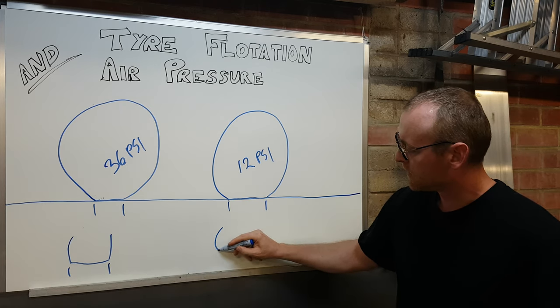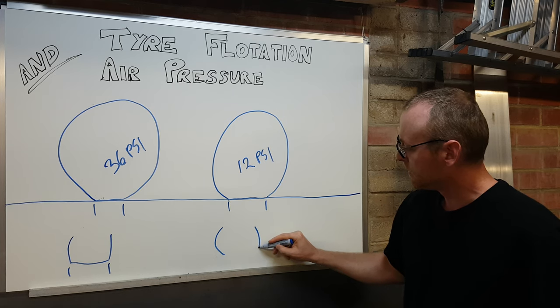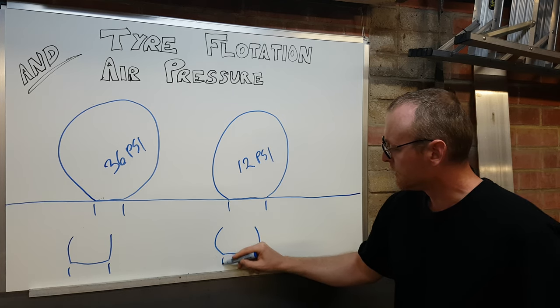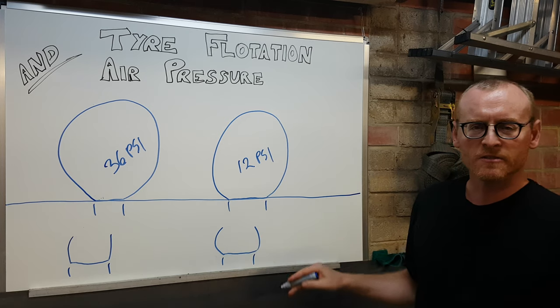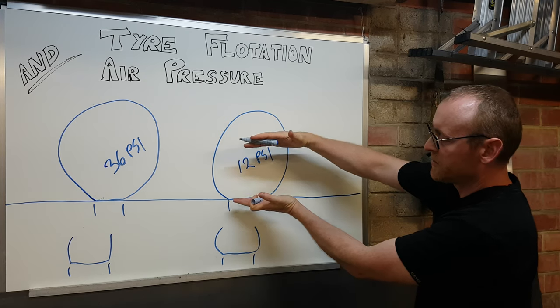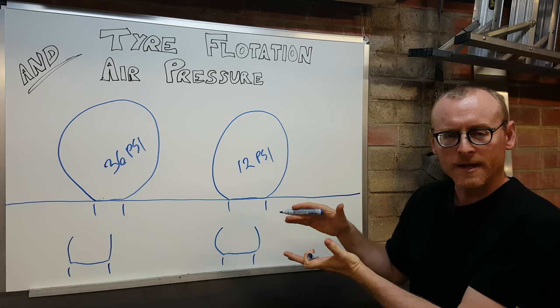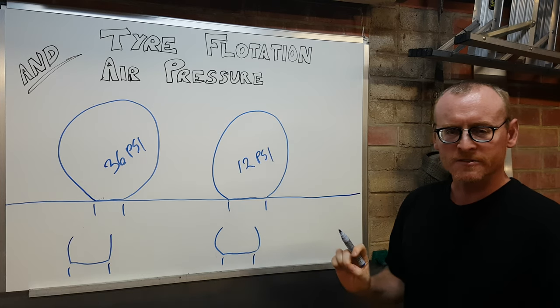With this one, you'll notice here, the bulging sidewalls. As this has compressed down, the sidewalls are now bulging in this lower portion of the tyre.